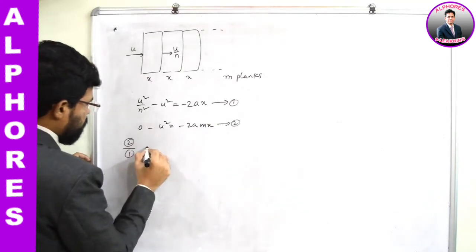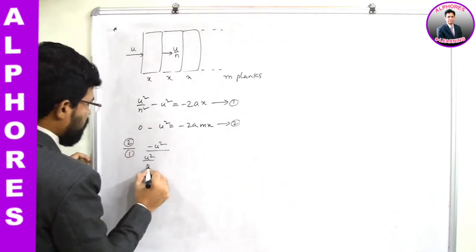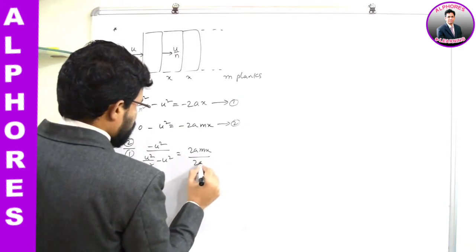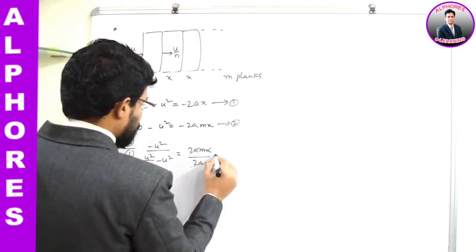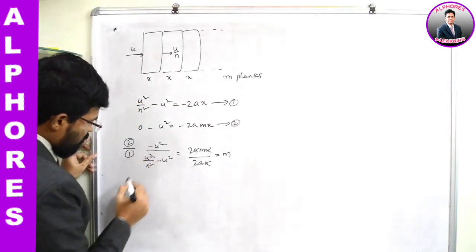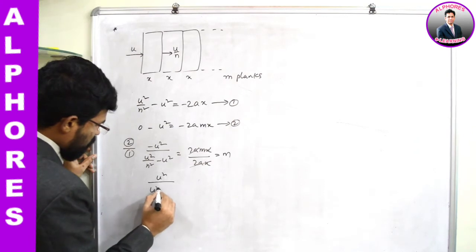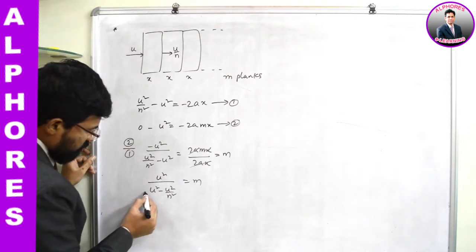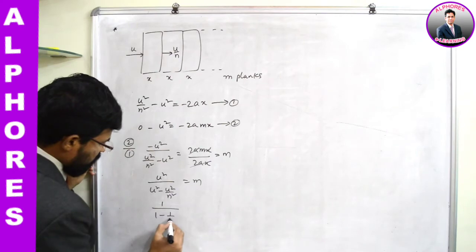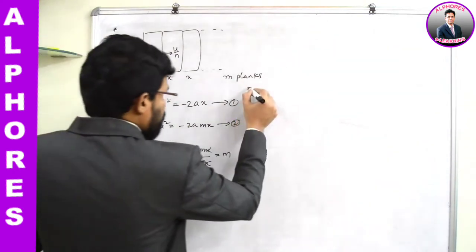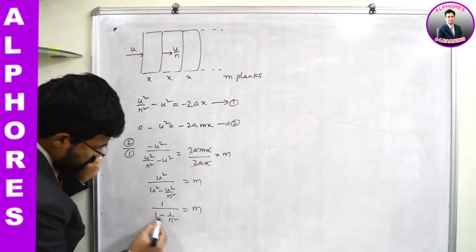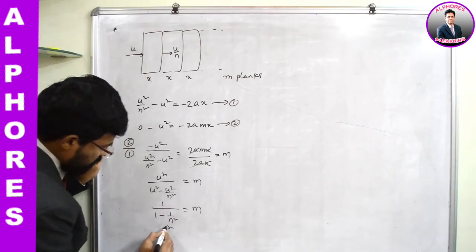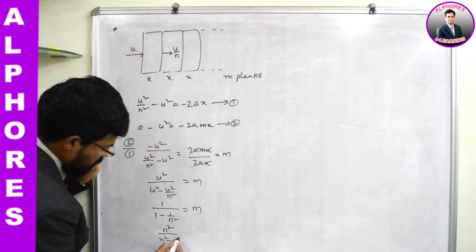Dividing equation 2 by equation 1: -u² / (u²/n² - u²) = 2a(mx) / 2ax. The 2ax cancels. Multiplying the negative sign into the denominator: u² / [u² - u²/n²] = m. Taking u² common and cancelling: 1 / (1 - 1/n²) = m. Taking LCM: n² / (n² - 1) = m.